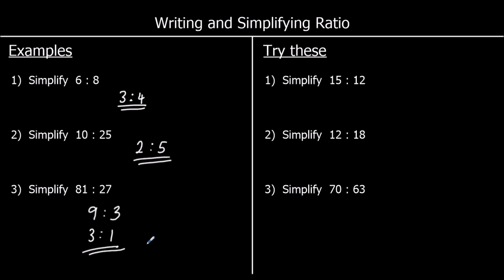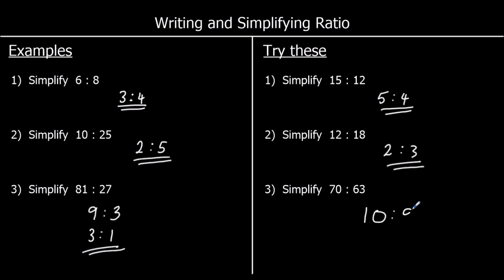Three for you to try, so pause the video and give them a go. Question 1: 15 and 12 are both in the three times table, so we've got 5 threes and 4 threes, giving 5 to 4. Next, 12 and 18 — the biggest times table they're both in is the six times table, so we've got 2 sixes and 3 sixes, giving 2 to 3. And 70 and 63 are both in the seven times table — we've got 10 sevens and 9 sevens, so the ratio is 10 to 9.